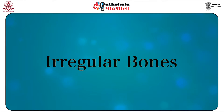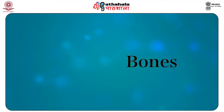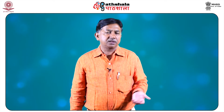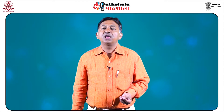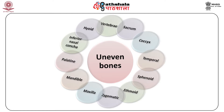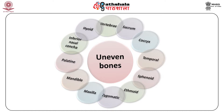Now let's see the irregular bones. The irregular bones, owing to their irregular form, do not fall under the previous categories. They consist of cancellous tissue surrounded by a thin layer of compact bone. The irregular bones are: the vertebrae, sacrum, coccyx, temporal, sphenoid, ethmoid, zygomatic, maxilla, mandible, palatine, inferior nasal concha, and hyoid.